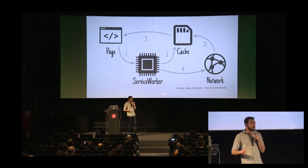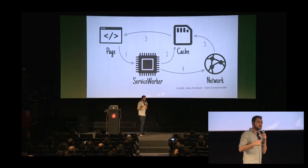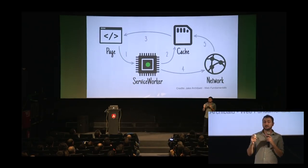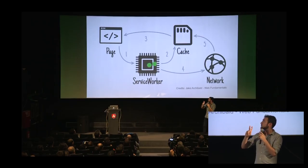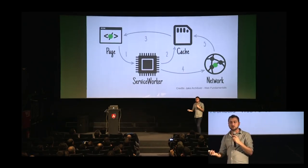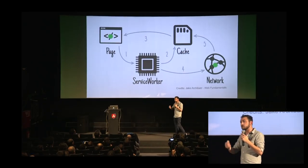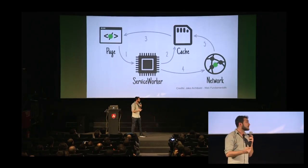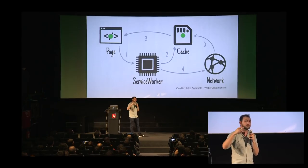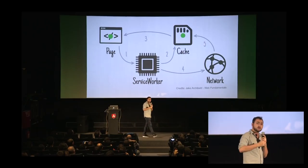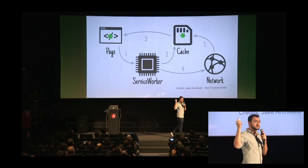There's also the 'fastest' strategy. The Service Worker forwards two requests simultaneously — one to the network and one to the cache. The cache is much quicker because it's disk-bound, not network-bound, so it returns data to the page immediately. Meanwhile, the network request updates the cache for next time, keeping your cache up to date while always getting the quickest response.